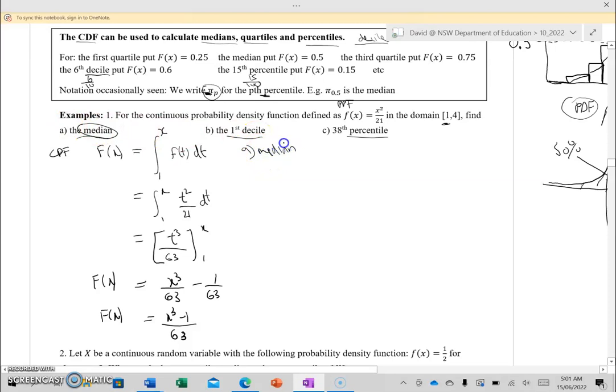Firstly, median: we set the CDF, F of X, to be 0.5. So we get 0.5 = (X³ - 1)/63. It's just a matter of solving this for X—solving like normal and taking the cube root. I put that in my calculator and I got 3.19 to 2 decimal places. So the median for this particular PDF will be 3.19 to 2 d.p.